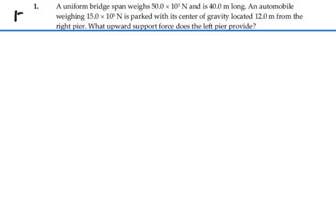Here's problem 12.1. A uniform bridge span weighing 50 times 10 to the 3 newtons and is 40 meters long. An automobile weighing 15 times 10 to the 3 newtons is parked with a center of gravity located 12 meters from the right pier. What upward support force does the left pier provide?